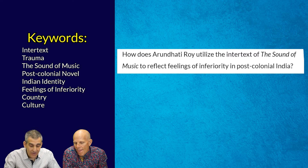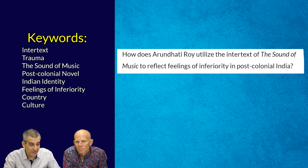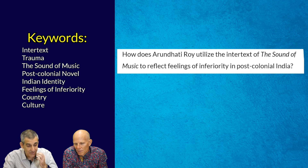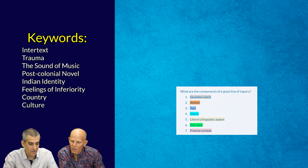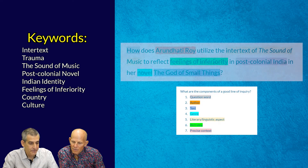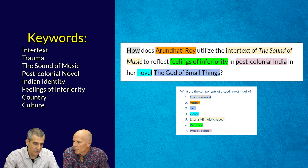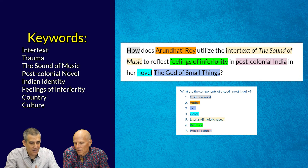Let's highlight what we've got: the 'how' question word, the author, the literary aspect of intertext, the name of the referenced work Sound of Music. But we don't yet have the name of the novel — The God of Small Things. We need to add that. You could put it at the end of the sentence: 'in the novel The God of Small Things.' So the complete line of inquiry now includes all required components.